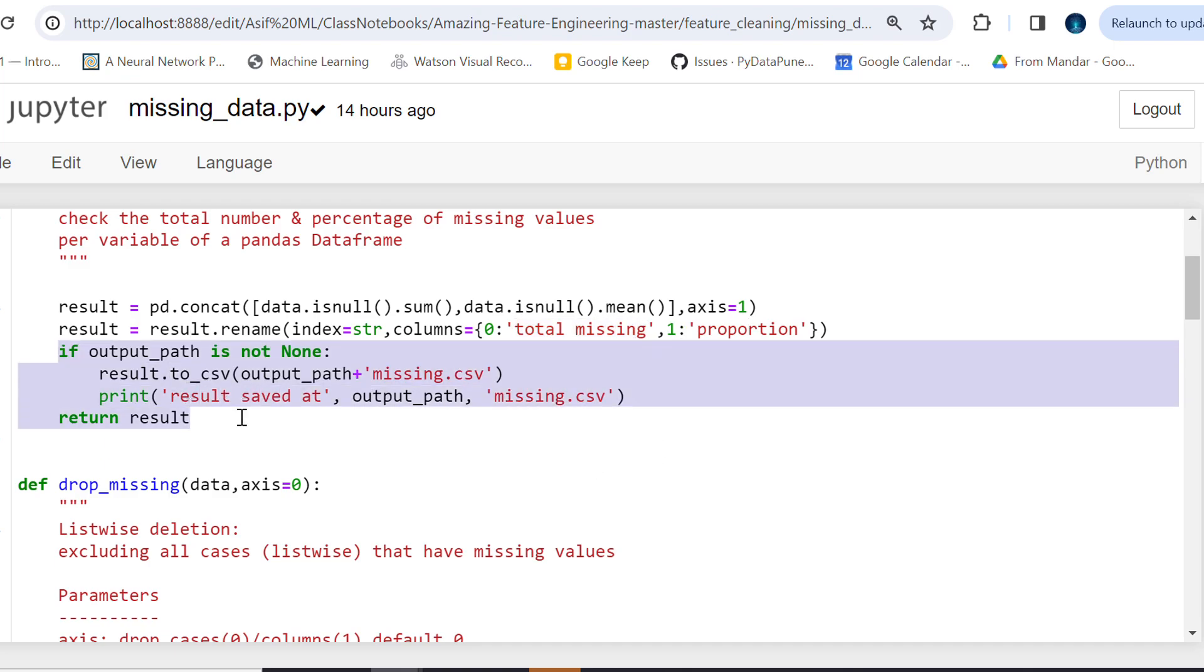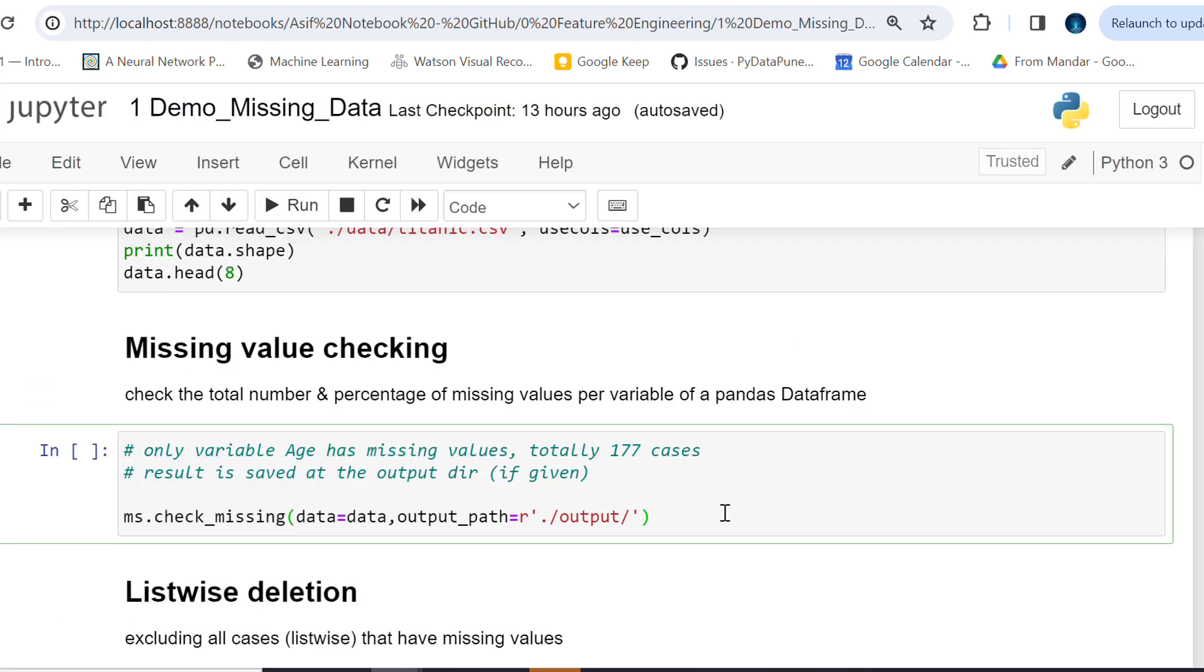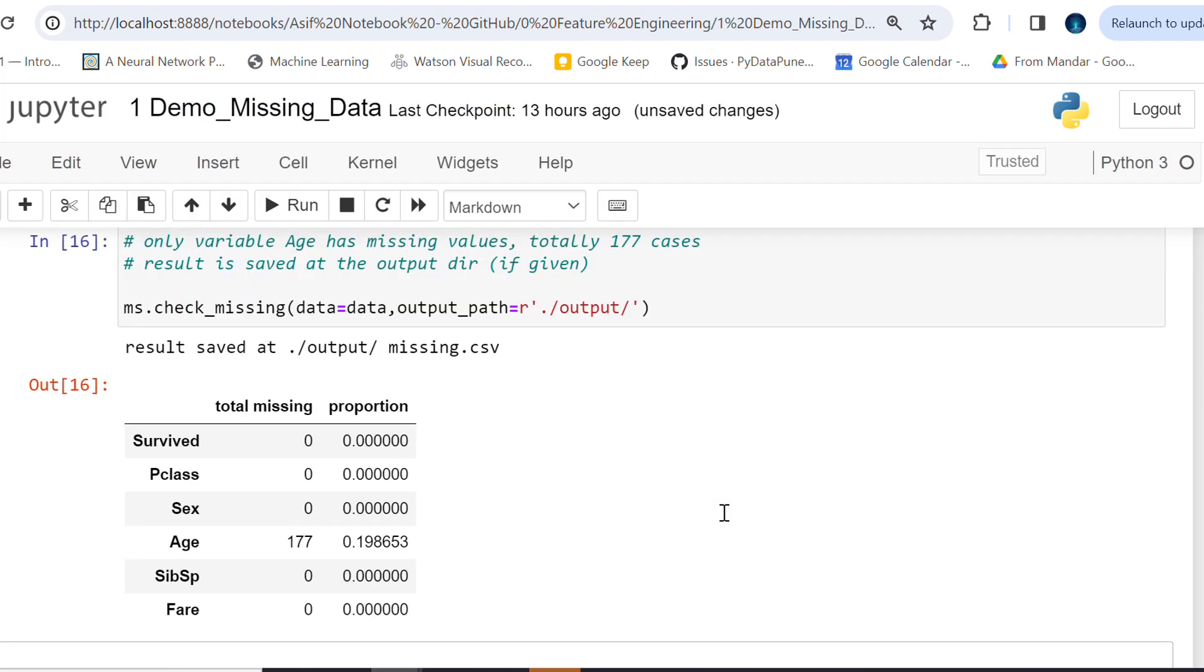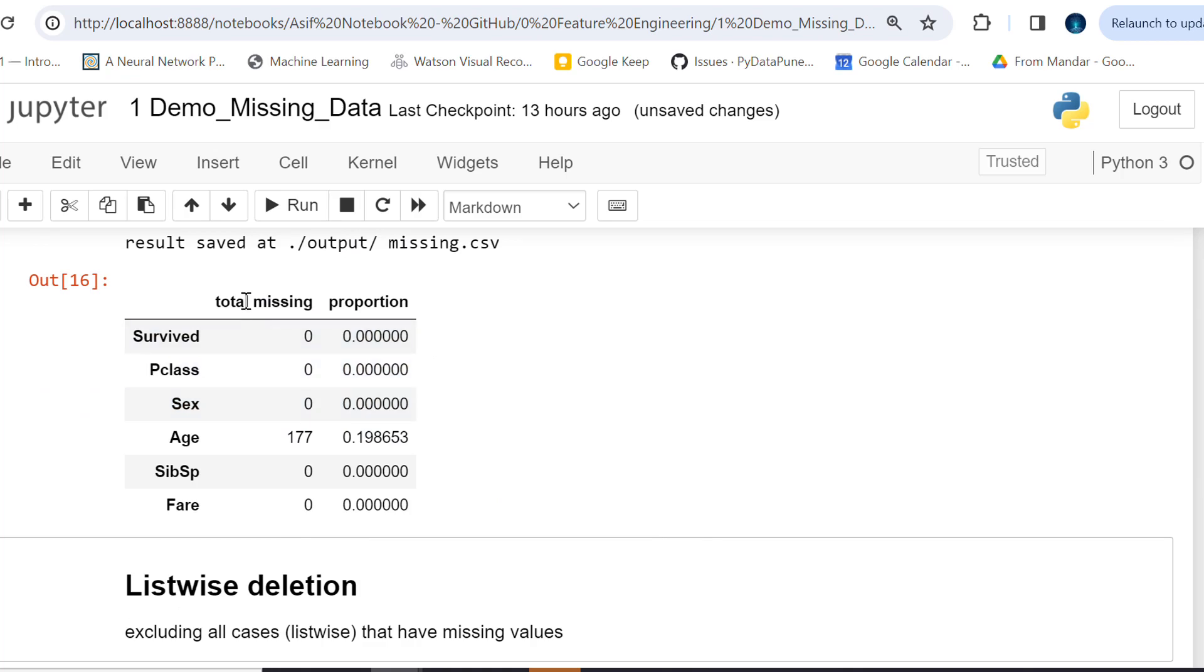Let's see how it looks like. Let me execute this to see the missing values. So I can easily see that total missing for Age is 177, whereas for other columns we do not have any missing data. Beautiful.